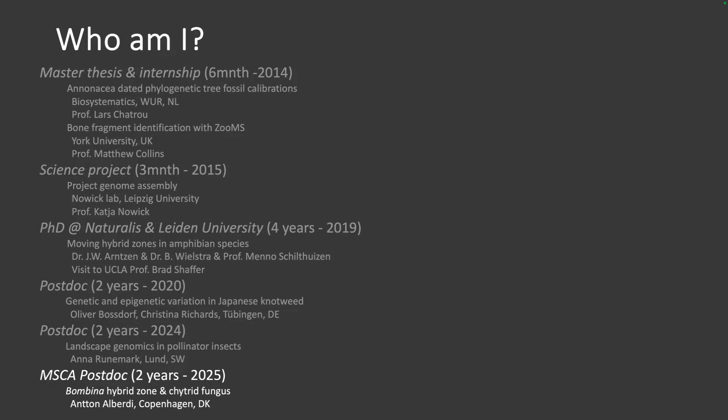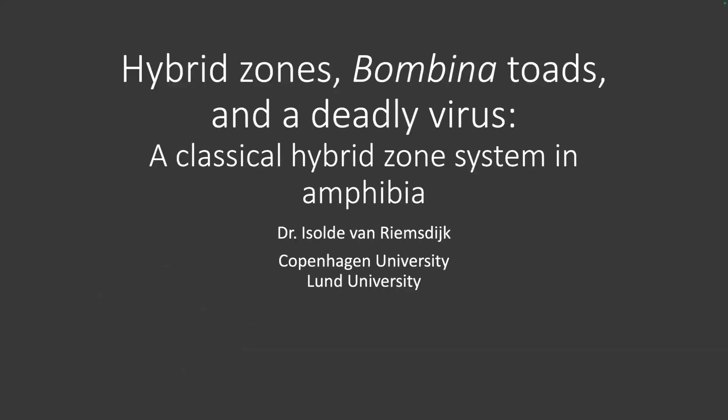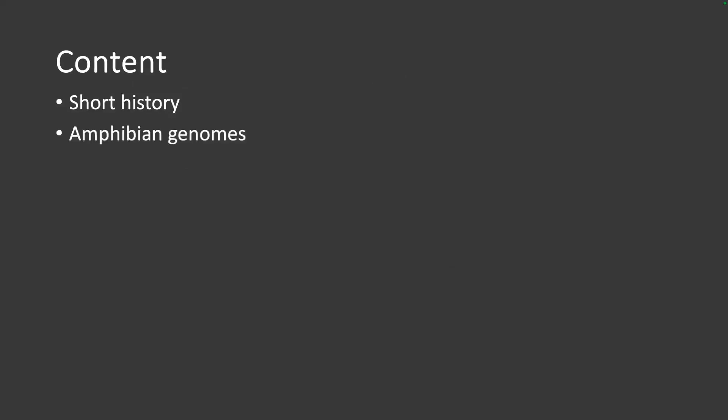Today I'll talk about my Marie Curie project that I recently started here in Anton's group. I'll try to give you the theoretical framework. I'll start with a short history of how the project got started and how I got the funding to work on it. Then I'll explain a little bit about why amphibian genomes are difficult to work with, and talk about the theory and hypotheses used within hybrid zone research, slowly interweaving the system.